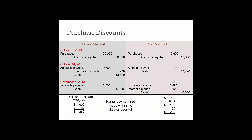Here's how you would handle purchase discounts. Using the gross method: purchases $20,000, accounts payable $20,000. Then accounts payable $14,000 — we received a 2% discount — and purchase discounts $280, cash $13,720. Then we pay the remainder with accounts payable and cash. Using the net method, purchases are recorded net of the discount — purchases and accounts payable are recorded at the discounted amount. Then accounts payable and cash. If we didn't pay within the discount period, the forgone discount is recorded as interest expense.